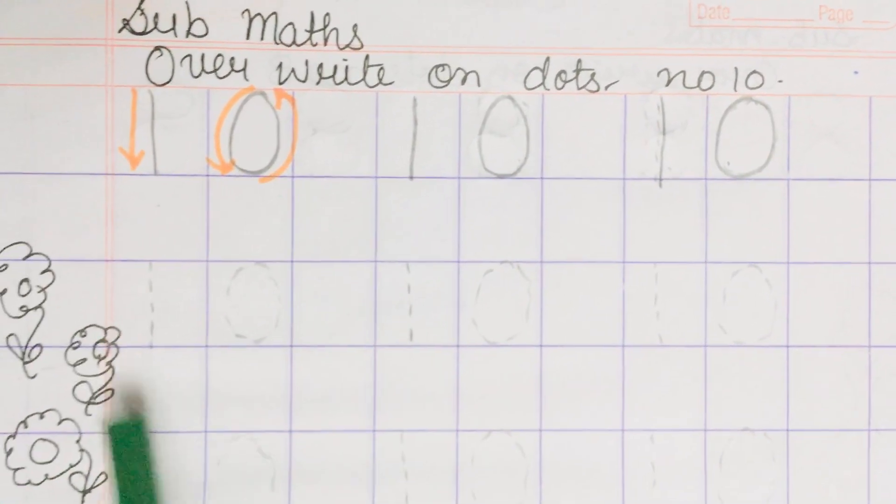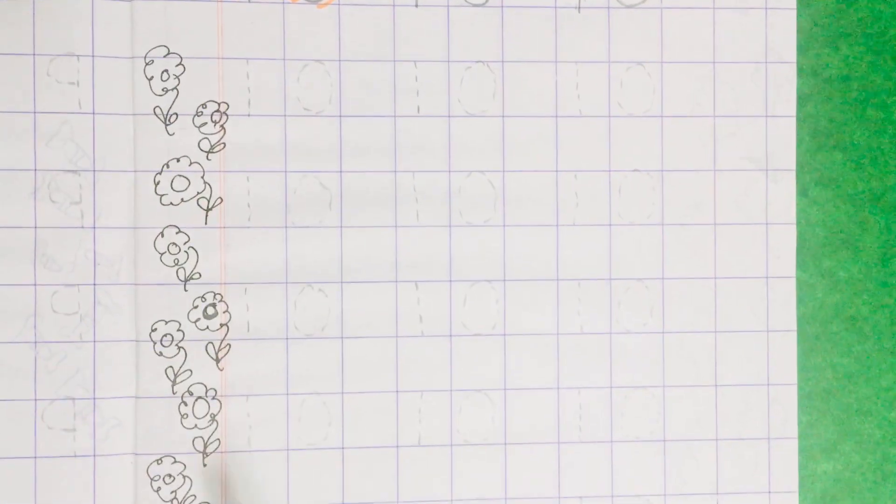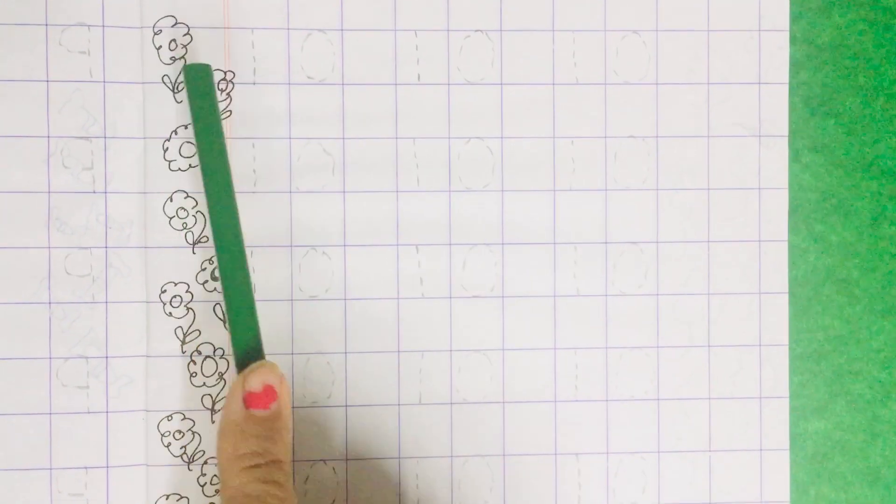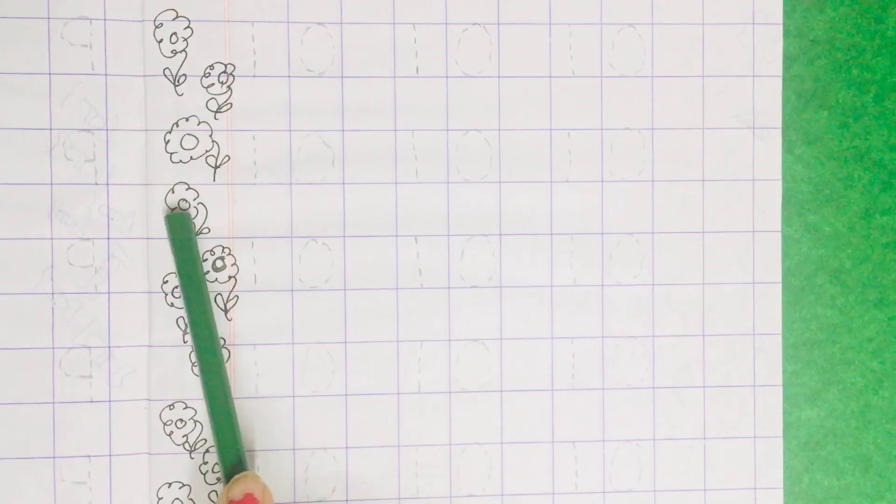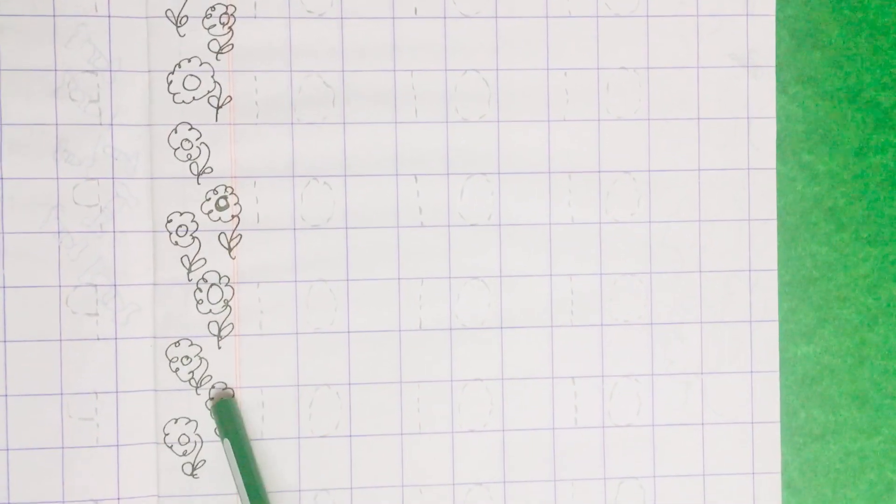Now count with me. There are some flowers. What are these? These are flowers. Speak with me: these are flowers. Count with me: 1, 2, 3, 4, 5, 6, 7, 8, 9, 10.